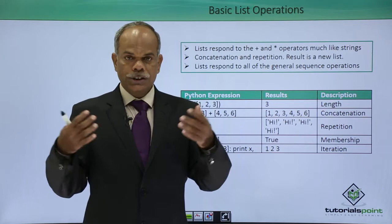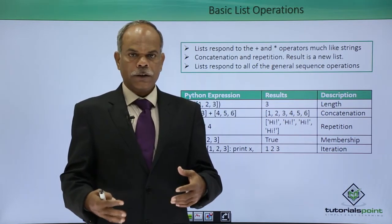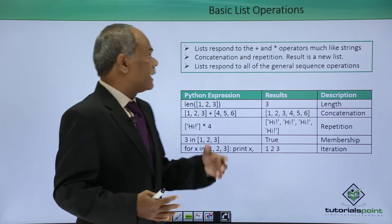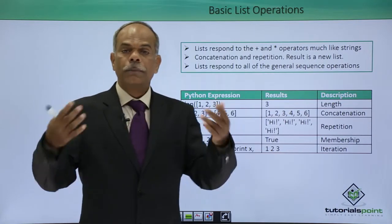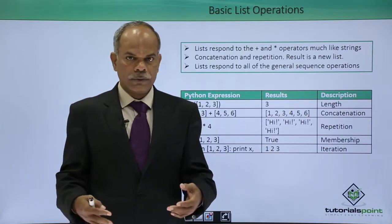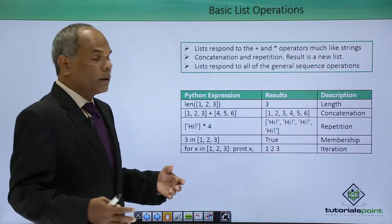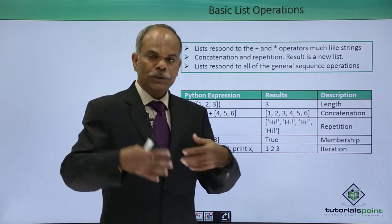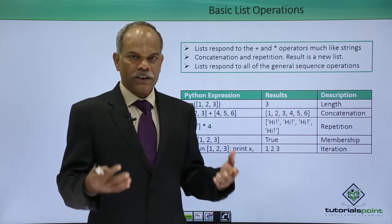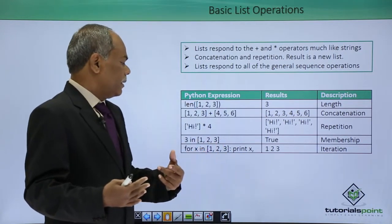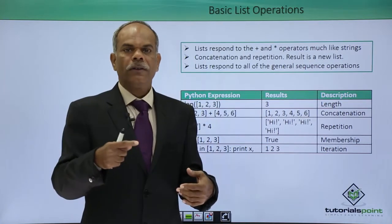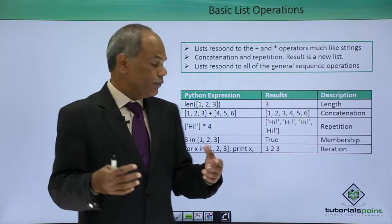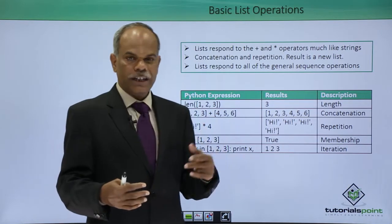List is also a sequence data type. Therefore, operations like concatenation, repetition, et cetera, can also be performed on a list object. List also can respond to the operators like membership operators in or not in. And you can also iterate over the collection of elements inside the list with the help of a for statement.